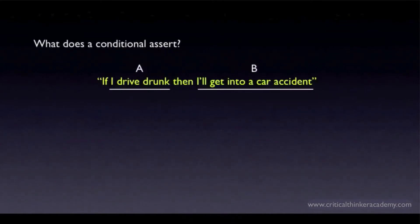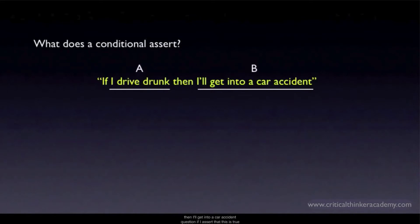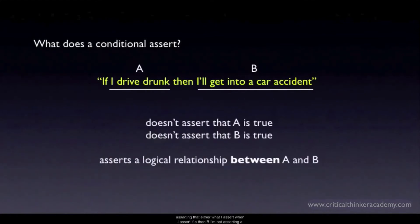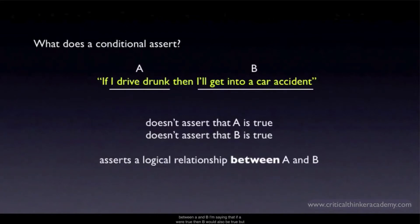It's pretty easy to understand what conjunctions and disjunctions assert, but it's not quite as easy to see what you're asserting when you assert a conditional. Consider: if I drive drunk, then I'll get into a car accident. If I assert that this is true, am I asserting that I'm driving drunk? No. Am I asserting that I'm going to get into a car accident? No. When I assert 'if A then B,' I'm not asserting A and I'm not asserting B. I'm asserting a conditional relationship — a relationship of logical dependency between A and B — saying that if A were true, then B would also be true, without asserting that either A or B is in fact true.